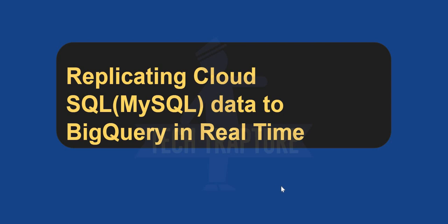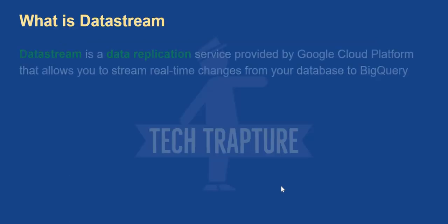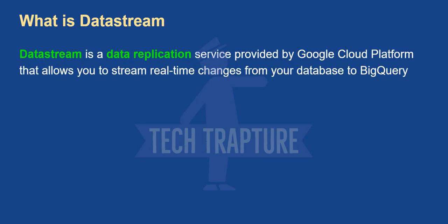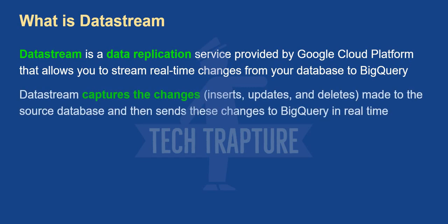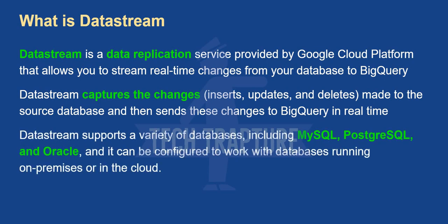Datastream is a data application service provided by Google, launched in 2021. It is used for data replication from your transactional database to BigQuery, or in the form of files in a Cloud Storage bucket. It captures changes — updates, inserts, or deletes — made to your source database (Oracle, MySQL, or PostgreSQL) and replicates those changes into your destination BigQuery table in real time or near real time.